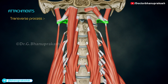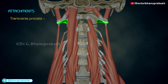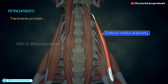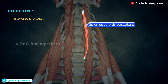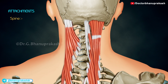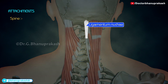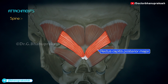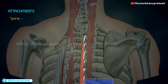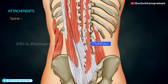The tip of the transverse process gives origin to levator scapulae, scalenus medius anteriorly, and splenius cervicis posteriorly. The upper and lower surfaces of the process give attachment to the intertransverse muscles. The spine gives attachment to the ligamentum nuchae, semispinalis cervicis, rectus capitis posterior major, inferior oblique, spinalis cervicis, interspinalis, and multifidus.